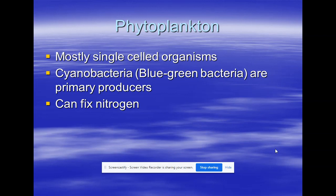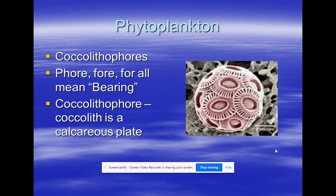Phytoplankton are plant-like plankton — most are single-celled, some colonial. Cyanobacteria, the blue-green bacteria, are also phytoplankton and can fix nitrogen from the atmosphere or water into usable forms for living things. Coccolithophores are really cool — they have calcium carbonate plates called coccoliths. There's an electron micrograph of one here. Diatoms are one of the biggest groups of phytoplankton — they have a glass cell wall like two petri dishes fitting over each other, and are the most abundant and obvious members of the phytoplankton. Some diatoms are visible with the naked eye at one millimeter. I think they're really beautiful.